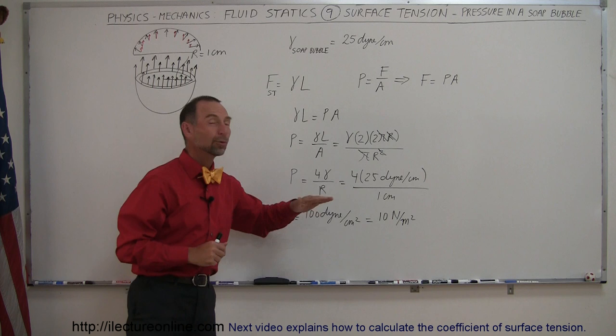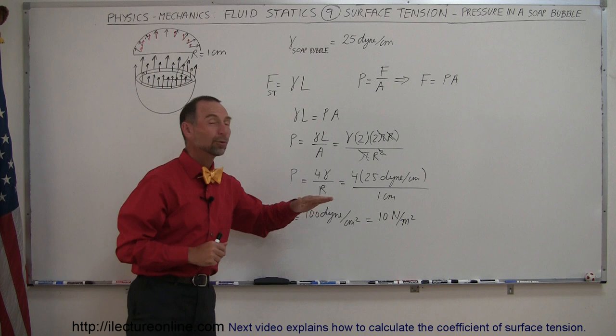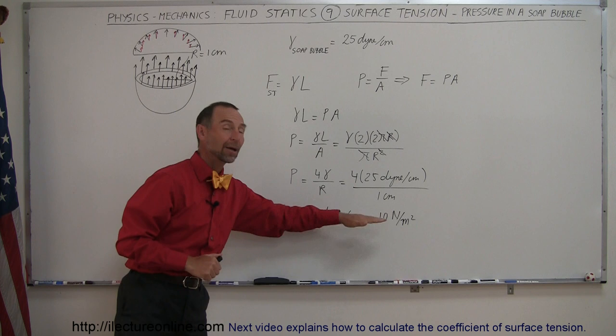So if the radius was, for example, 0.1 centimeters, or 1 millimeter radius soap bubble, then the pressure would be 10 times as high. It would then be 100 newtons per square meter. But that's how you figure out the pressure inside a soap bubble.